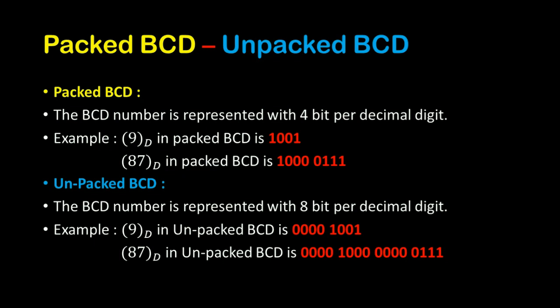So here, for 8 we are taking 4 bits and for 7 also we are taking 4 bits. Like this, we represent a Packed BCD number. Coming to Unpacked BCD, the number is represented with 8 bits per decimal digit.